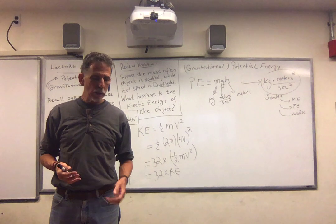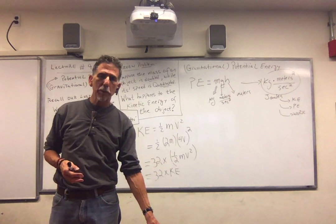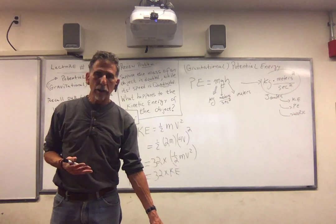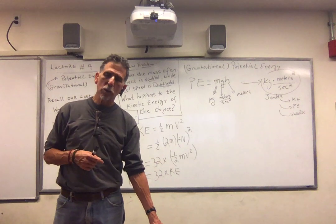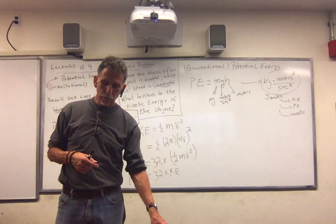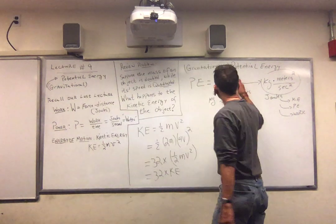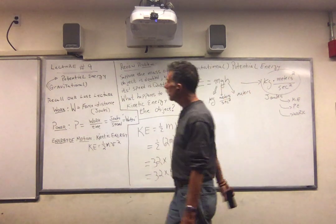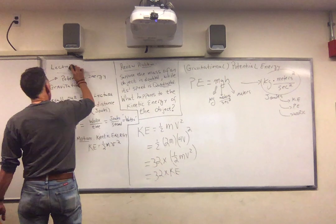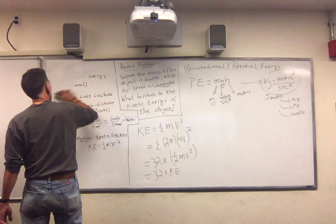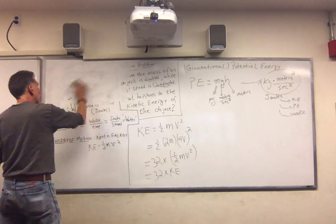So, we call it potential energy because a lead brick sitting on top of something isn't doing anything. But it has the potential to do something if it falls. What I want to do now is I want to put gravitational potential energy together with kinetic energy.